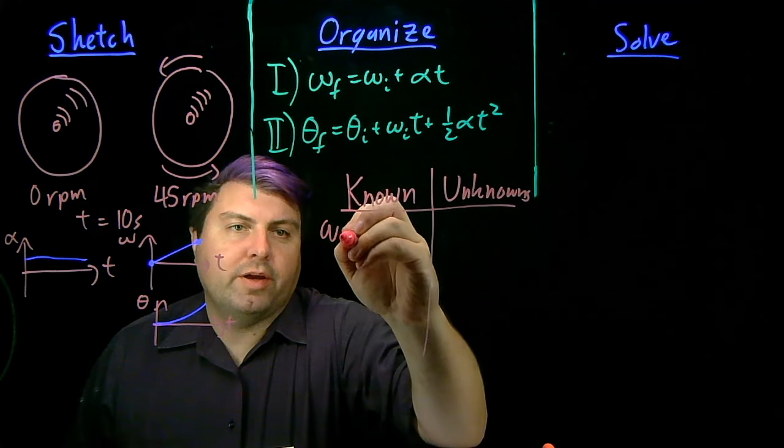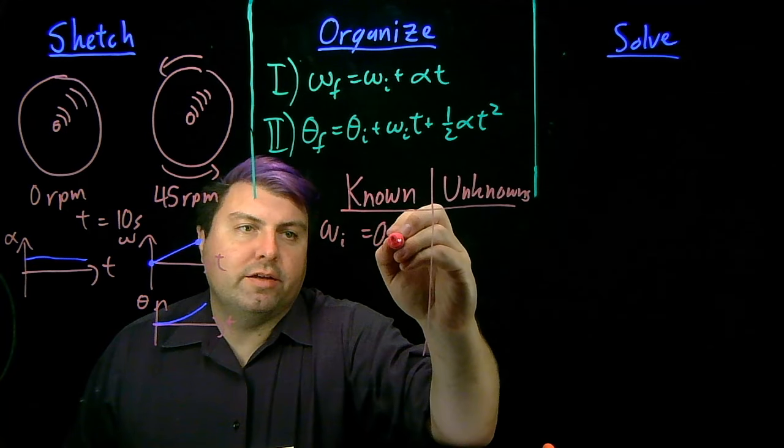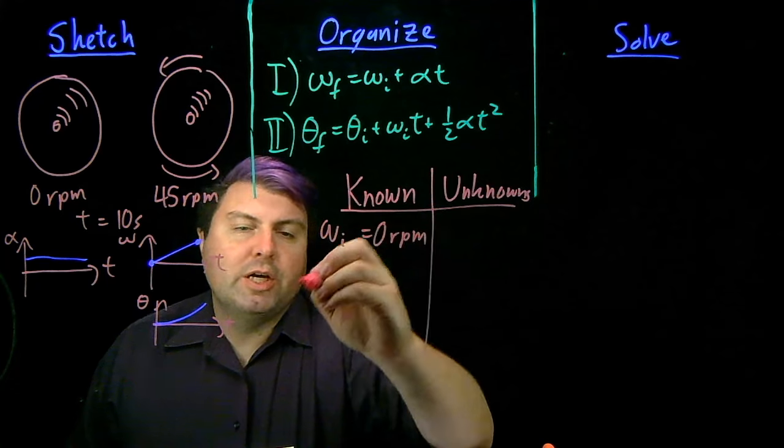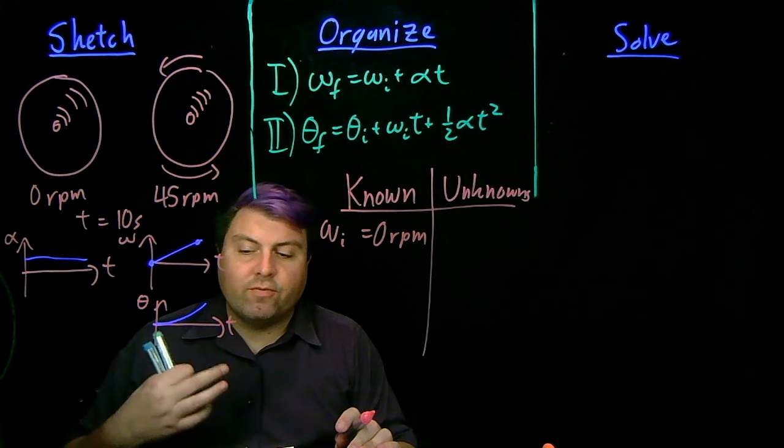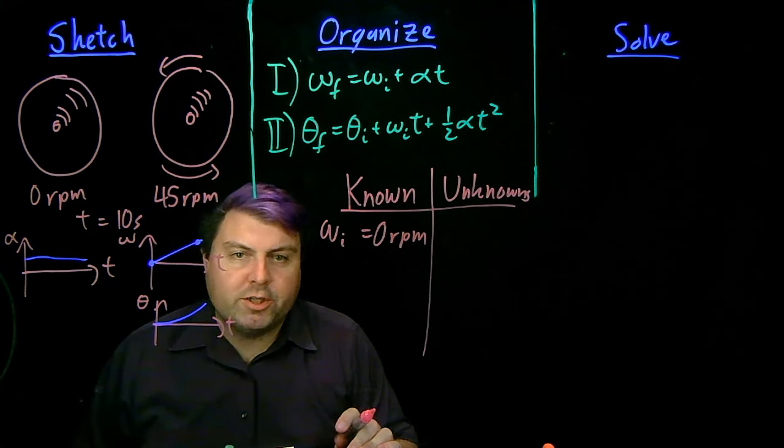So we know that our omega i is zero RPM. We know omega f is 45 RPM, but we should probably do a conversion.